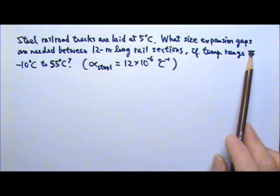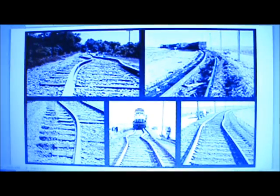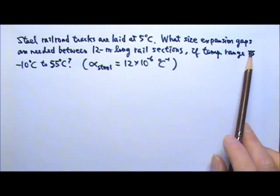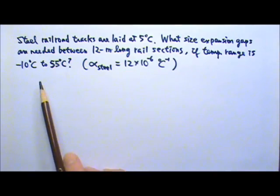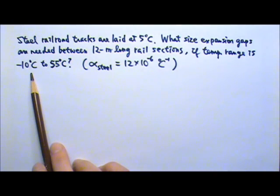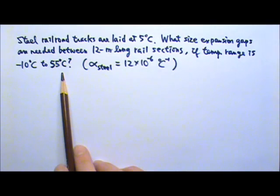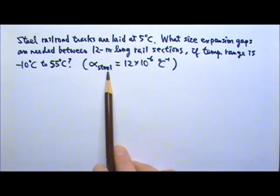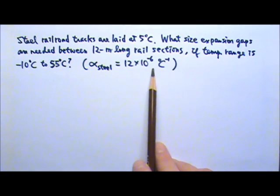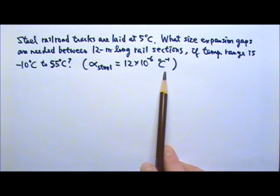What size expansion gaps should be used between sections of rails to prevent rail distortions like these? If it is designed to work under the temperature range between negative 10 degrees Celsius and 55 degrees Celsius, the alpha of steel is 12 times 10 to the negative 6 per degree Celsius.